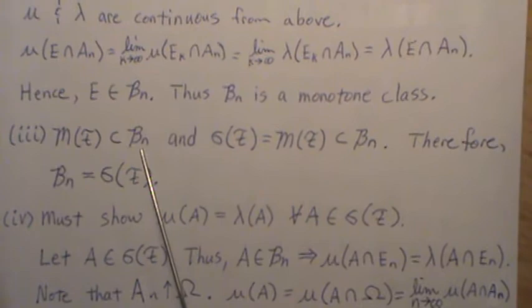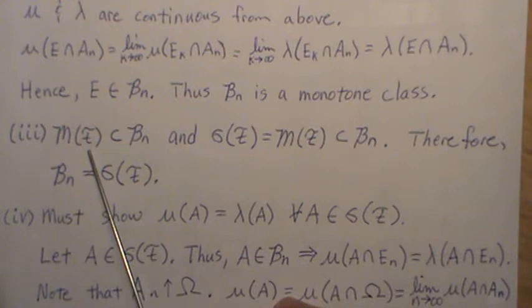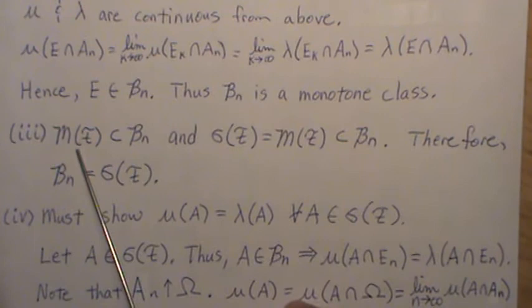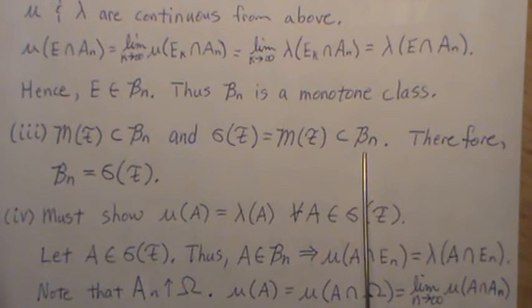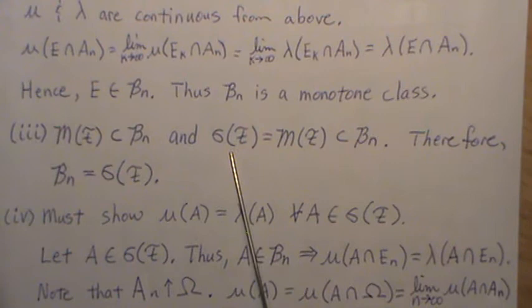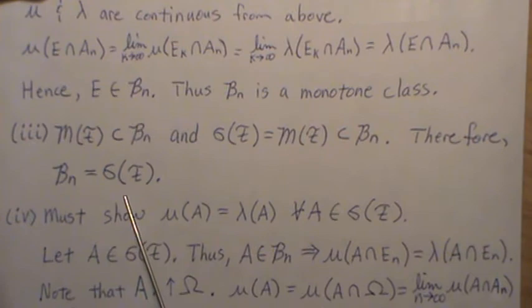So what have we shown? In step three, we know B_n is a monotone class that contains F. So the minimum monotone class of F must be a subset of B_n, because B_n is a monotone class containing F and m(F) is the minimum such. By the monotone class theorem, we know sigma(F) equals m(F), which is a subset of B_n. But in step one, we said B_n was a subset of sigma(F). Since they're each subsets of each other, they must be equal: B_n equals sigma(F).